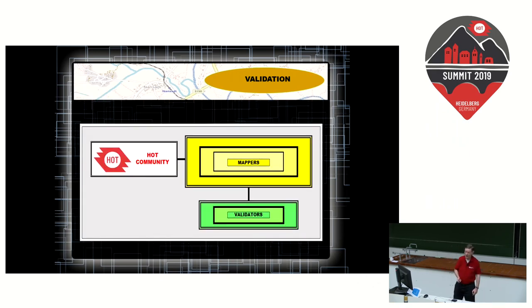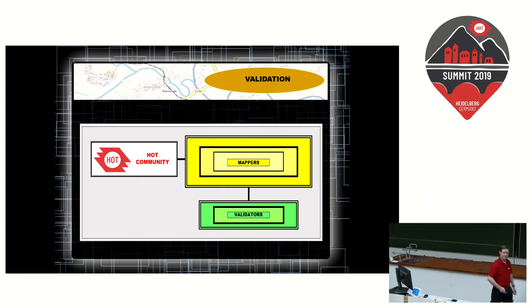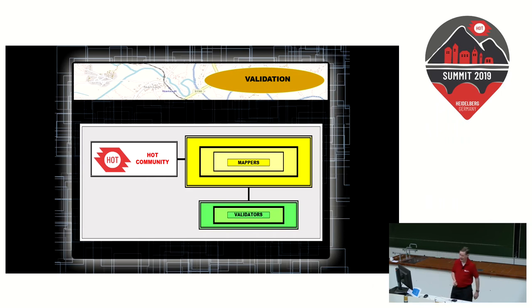What did we have then? We had the HOT community, which consisted of the organizers, a good pool of mappers which was continually growing, and those mappers were also your validators — the second pair of eyes. We had a growing pool of mappers, and it really looked comfortable and good. HOT was in control and had everything in hand.